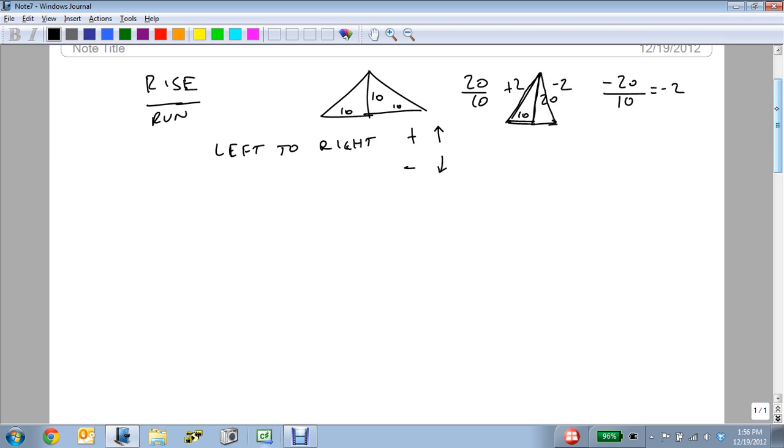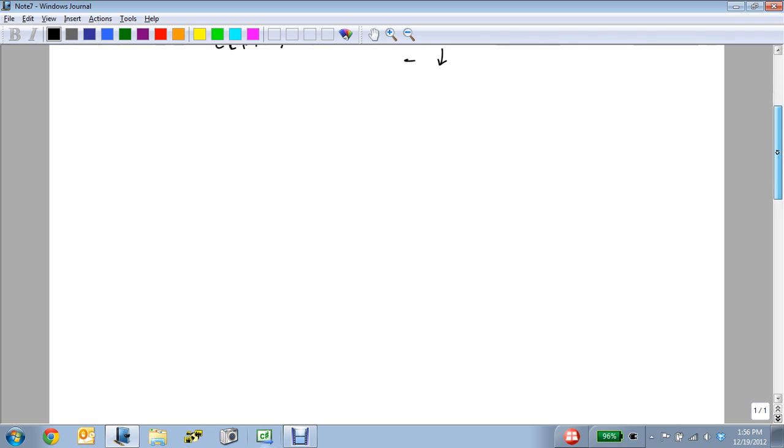Now, suppose we have two points sitting out in our rectangular coordinate plane. We have one over at 3, 6, and another one at minus 2, 2. And so we've got some line connecting these two.